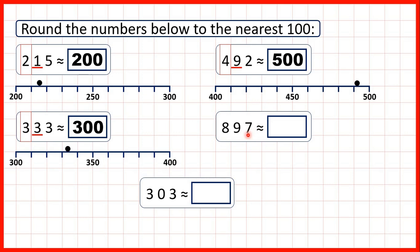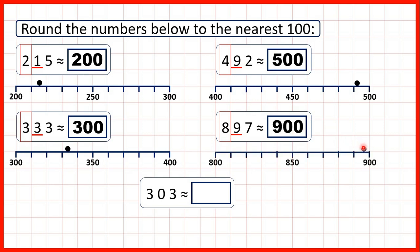Now 897. We look at our hundreds, then look to the right. It's 5 or more, so we're rounding up, which means we add 1 to the digit we've circled. So this 8 becomes a 9, giving us 900. On a number line, 897 is between 800 and 900, but it's much closer to 900. If we're counting in tens, we have 850 right in the middle, then 860, 870, 880, 890 — so 897 is closer to 900.